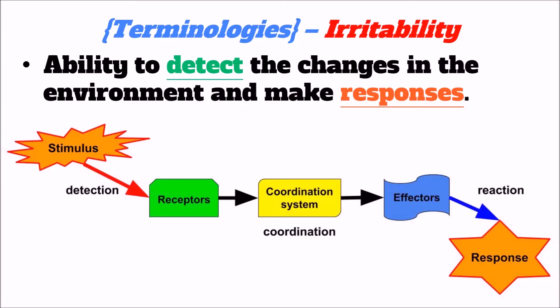Let's have a very brief definition of the terms first. Irritability, which is one of the seven characteristics of the organisms, is the ability of an organism to detect changes in the environment and make a response. There are three key elements in irritability, which are detection, coordination, and reaction.